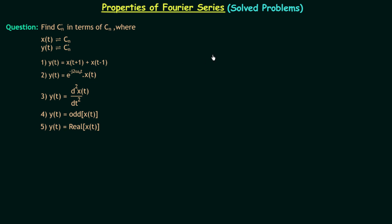In this presentation we will solve 5 questions using the properties of Fourier series expansion. In the first question we are required to find cn' in terms of cn, where x(t) has the coefficient cn and y(t) has the coefficient cn'. The first problem is y(t) = x(t+1) + x(t-1).